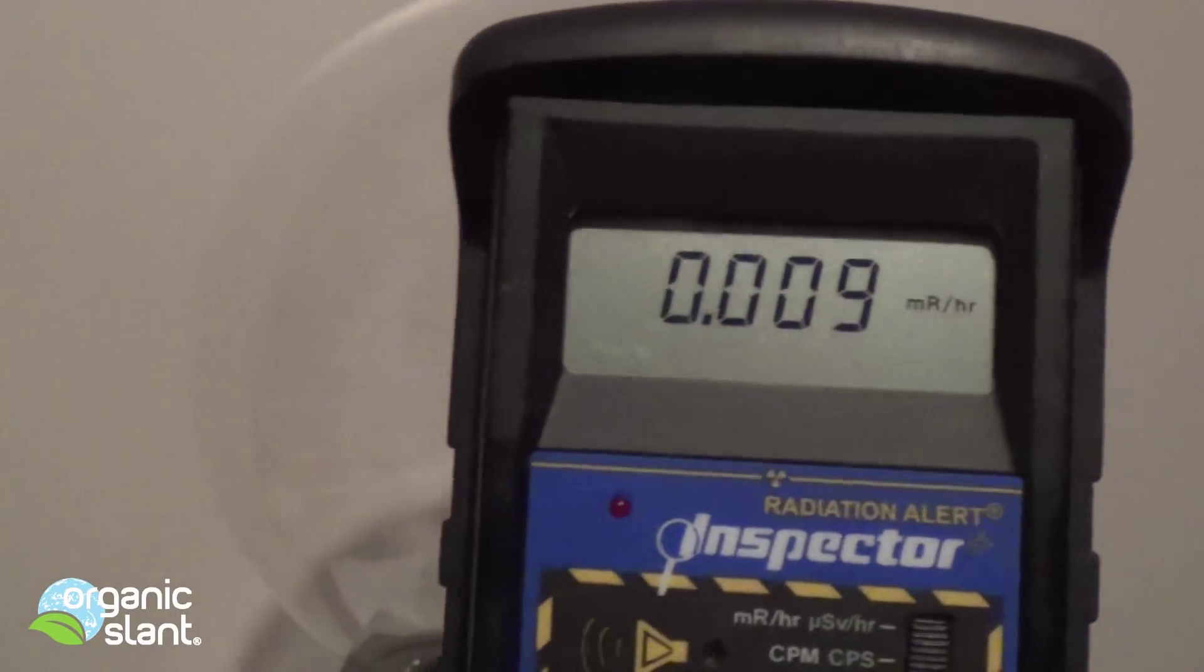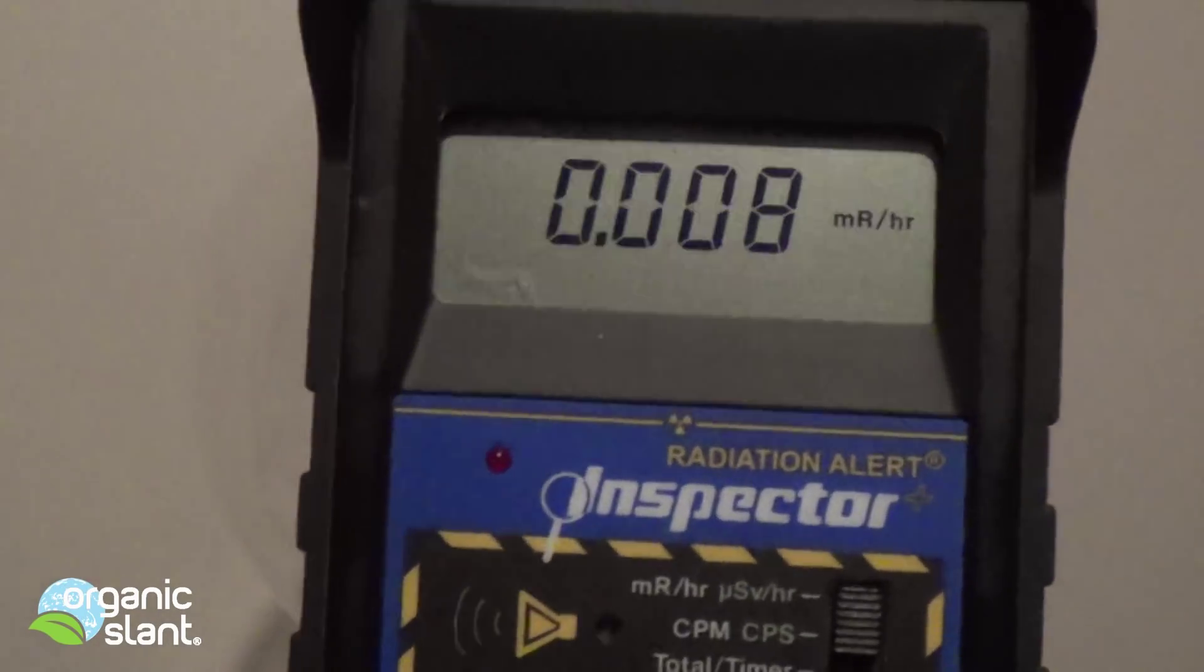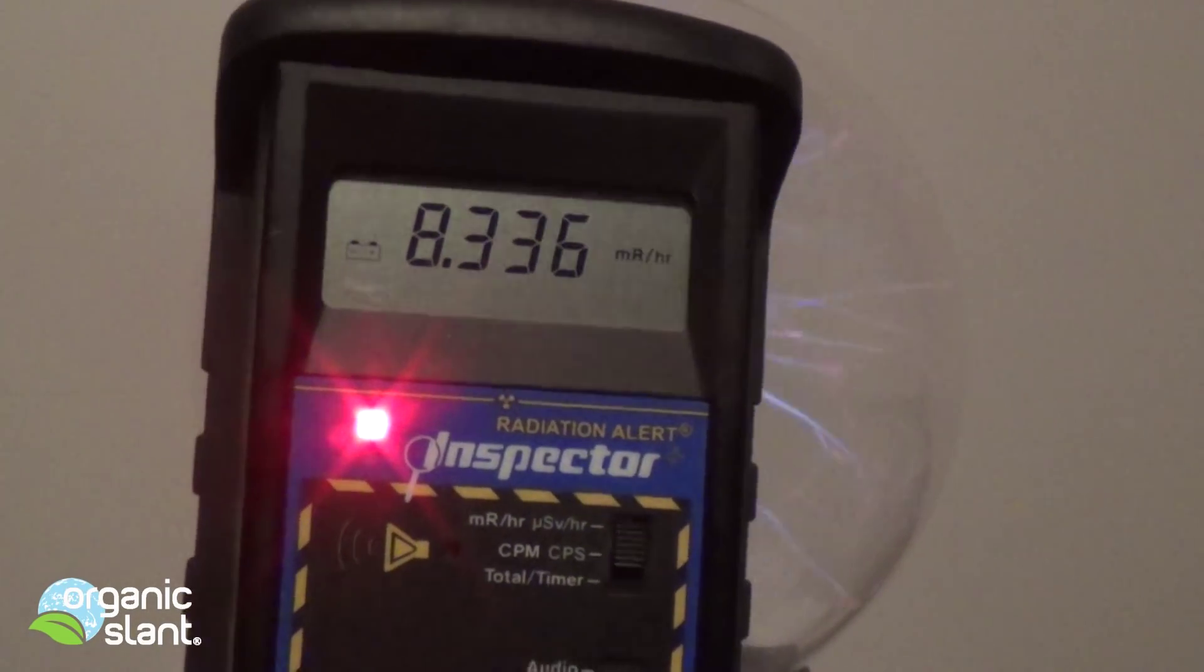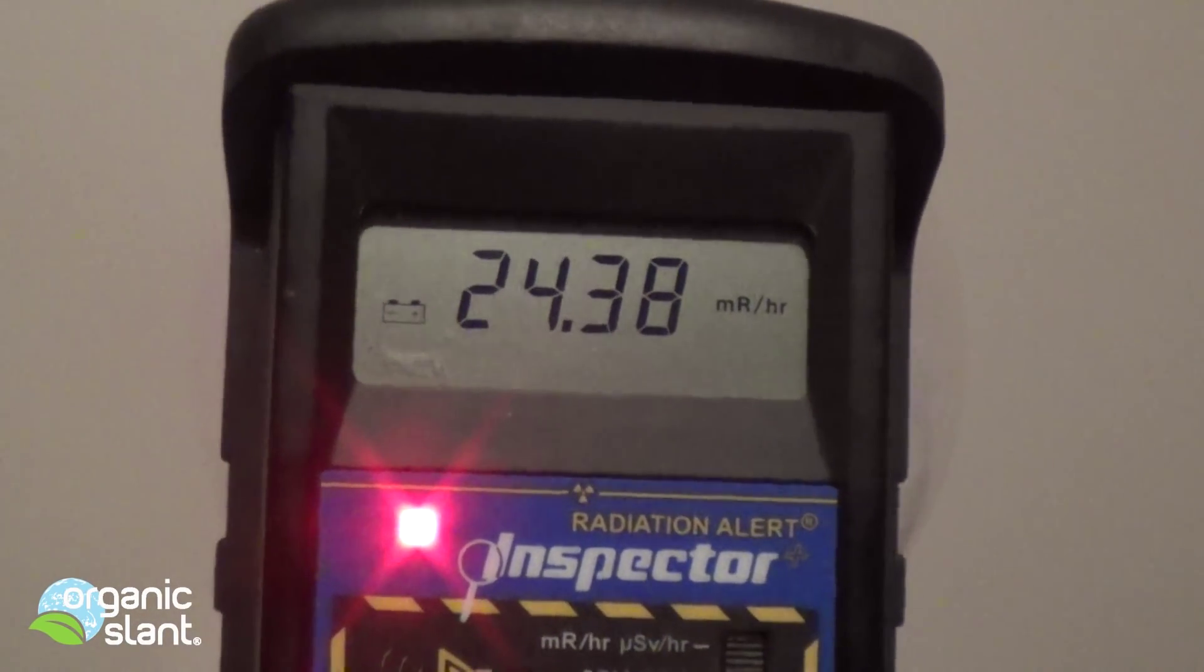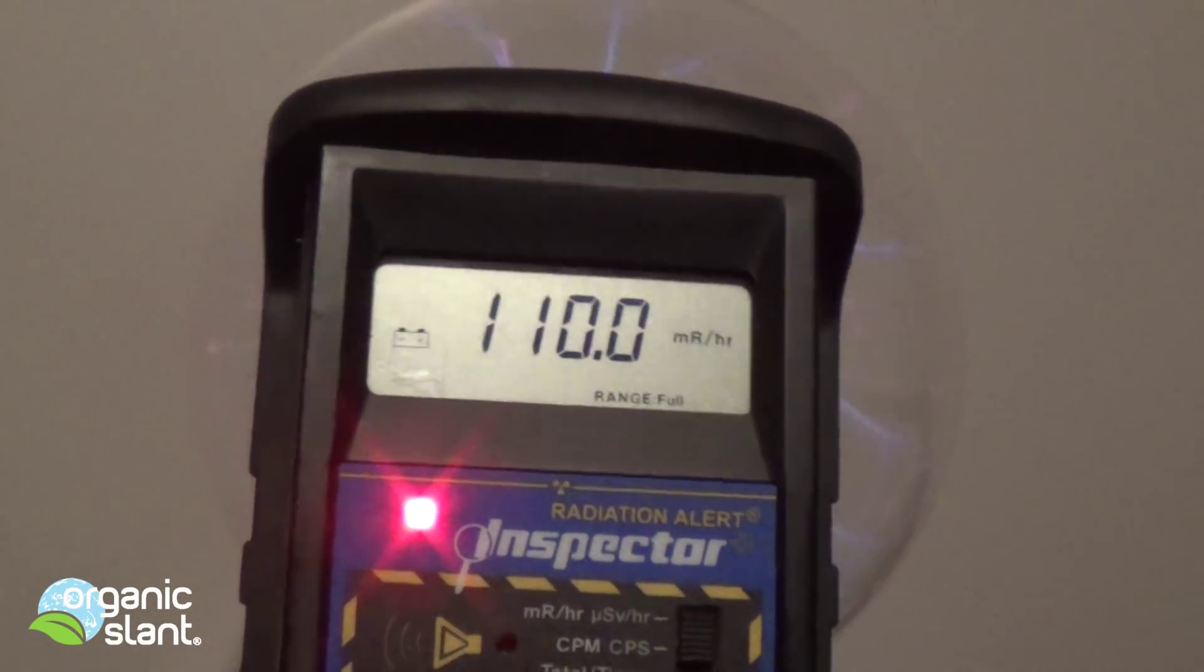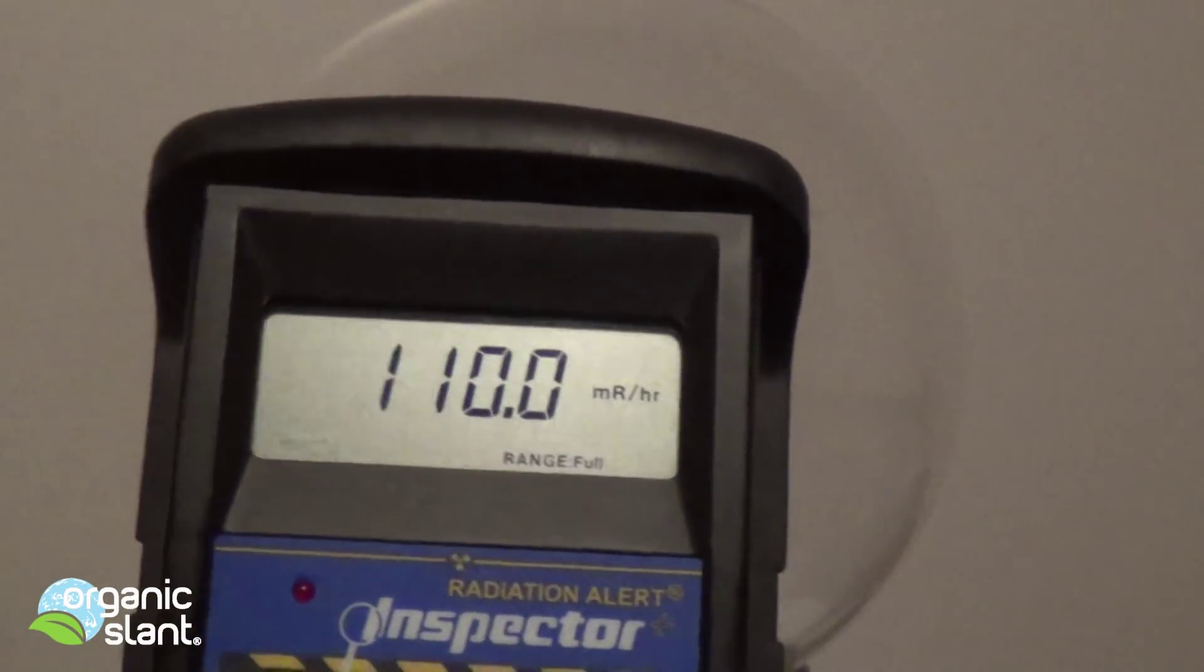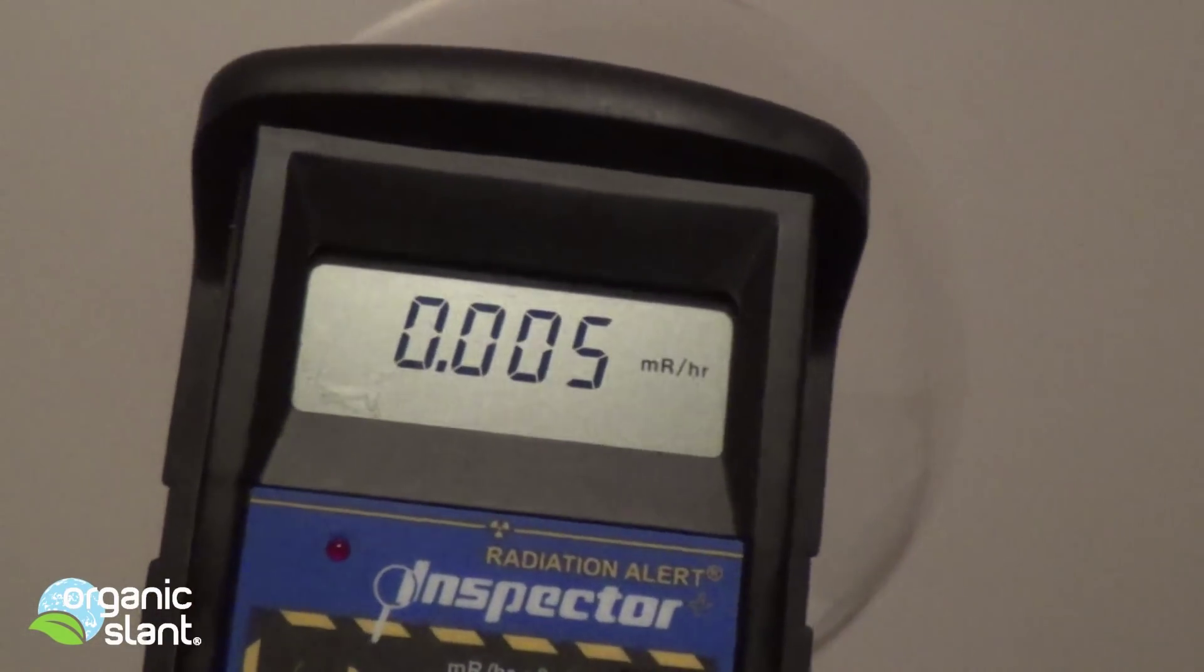Alright I kind of regret even doing this but I wanted to see what it's on the micro sieverts per hour, this different setting besides the CPM, so let's see what it gets. Twenty four. One ten. Alright let's turn it off. I think that's the peak. The point is this is ionizing radiation I'm pretty sure which I'm guessing is really bad for you so enough of the experiments. See how it goes back down. Be safe.